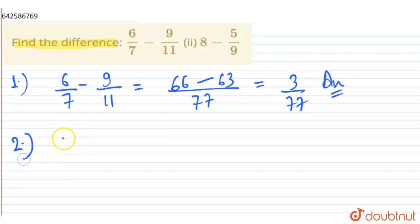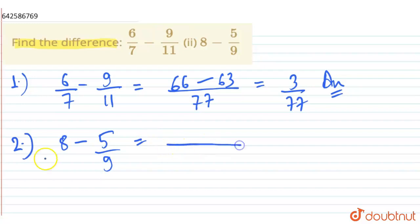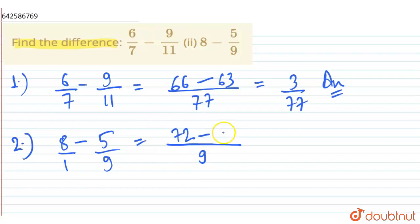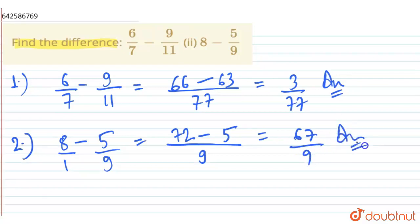Similarly, we will solve another question: 8 minus 5 by 9. For this, we find the LCM of 1 and 9, which is 9. Then we have 8 into 9, which is 72, minus 5 into 1, which is 5. This equals 67 by 9, which is our answer.